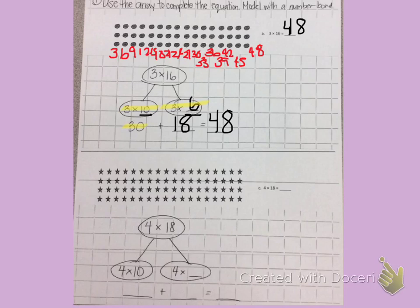Second problem, I have 4 times 18. Again, I have a 10 and another number that I'm breaking the 18 apart into. I have broken the 18 into a 10 and an 8.